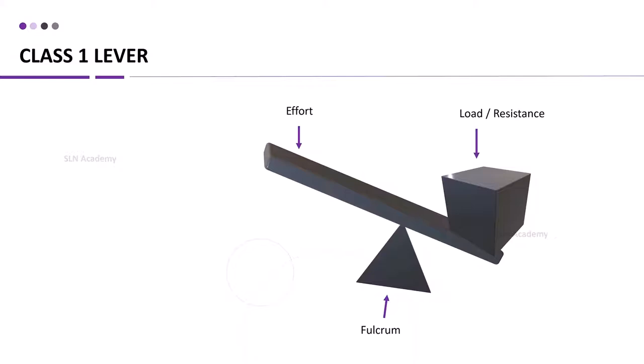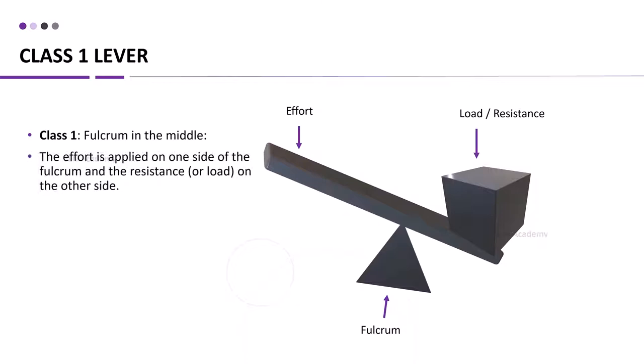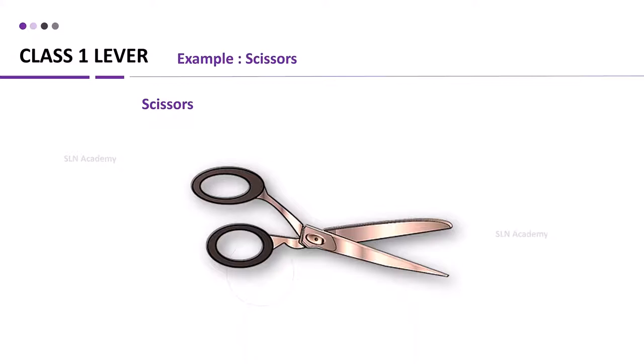In class 1 lever, fulcrum or fixed point is in the middle. The effort is applied on one side of the fulcrum and the resistance or load on the other side. Examples of class 1 levers are scissors, seesaw, pliers. Scissors is an example of class 1 lever. Fulcrum, the fixed point, is at the middle of the object.